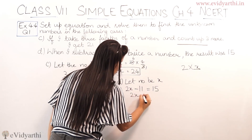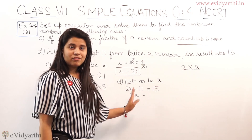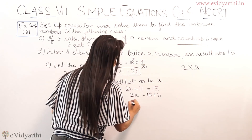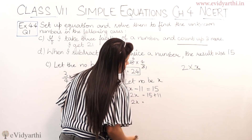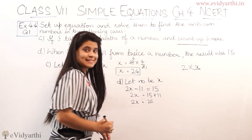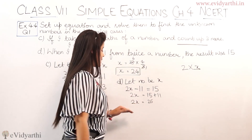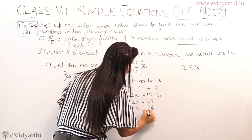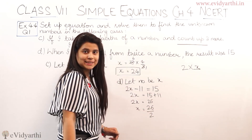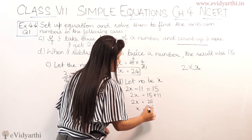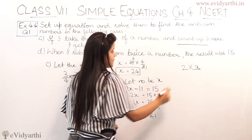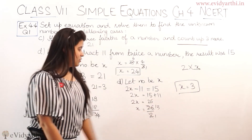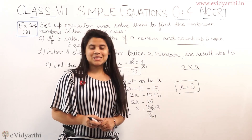Let's solve: 2x − 11 = 15. Send minus 11 to the other side as plus 11, so 2x = 15 + 11 = 26. Since 2 is multiplied with x, we divide: x = 26/2 = 13. So the value of x is 13.